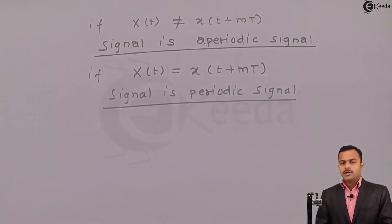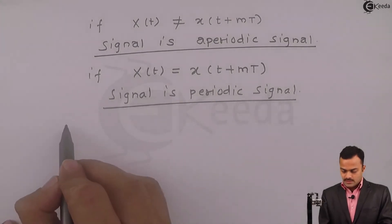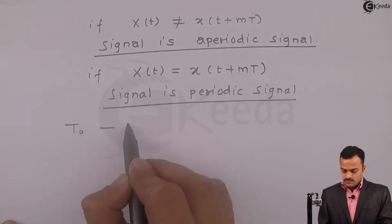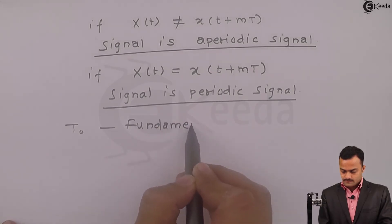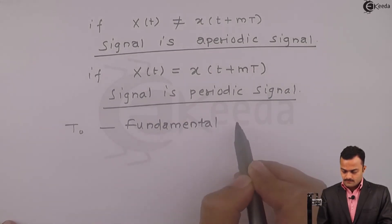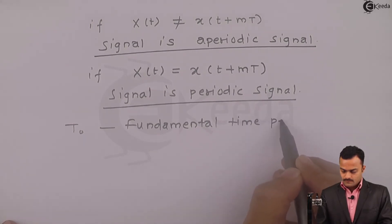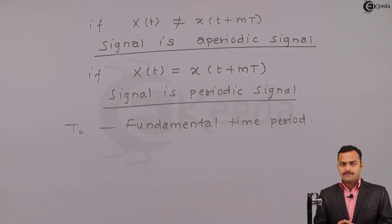Here we will introduce one term which we call as T0, fundamental time period. The smallest time in which signal repeats itself we call that as fundamental time period. So this is what we have seen for a continuous time signal. The same thing can be true for discrete time.